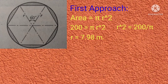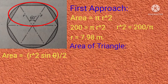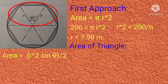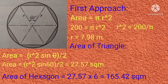Now that we have the radius r, we have a triangle with two sides equal to r and an included angle of 60 degrees. The area of this triangle is computed using the formula: Area = (r² × sin θ) / 2. Substituting: Area = (7.98² × sin 60°) / 2 = 27.57 square meters. To get the area of the hexagon, we multiply 27.57 by 6, giving an area of 165.42 square meters.